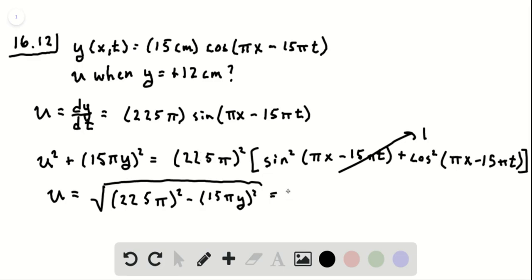Now this simplifies to 15 pi times the square root of 15 squared minus y squared, because we can take the 15 pi squared out. And so you see we've come up with an expression for u that doesn't involve x or t.